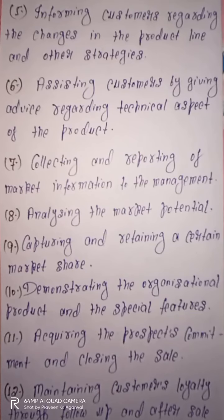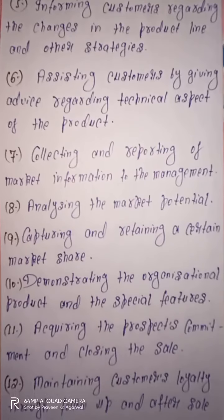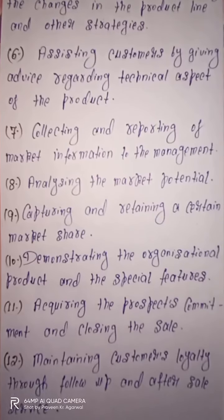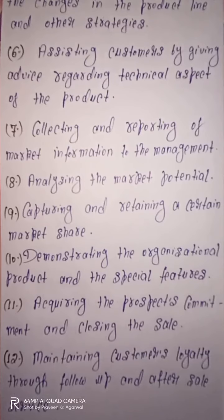Next one is collecting and reporting of market information to the management. Market me koi bhi changes ho rahe hain, ya market me jo bhi information unke paas collect ho rahi hai, use properly management ko report karna — ye bhi inki responsibility me include kiya jata hai. Iske saath saath, the next one is analyzing the market potential. Market potential ko properly analyze karna, ye dekhna ki market me kitna potential available hai, jiske basis par company ki sales ko jyada se jyada quantity me follow kiya ja sakta hai — toh market potential ko properly analyze karne ki responsibility bhi personal selling ke area me count ki jati hai.